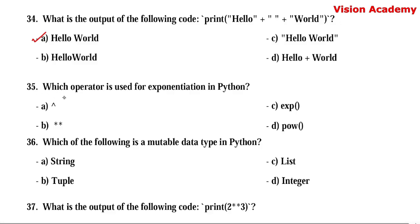Question number 35. Which operator is used for exponentiation in Python? Option A: caret symbol (^). Option B: double asterisk symbol (**). Option C: exponent function. Option D: power function. Here, option B — double asterisk symbol (**) — represents exponentiation.